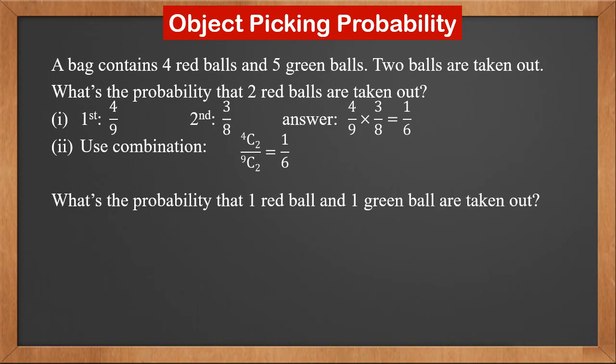What's the probability that one red ball and one green ball are taken out? Using the probability approach, for the first ball, the probability of red is four over nine. After a red ball is taken out, there are eight balls left in the bag and five of them are green. So the probability that the second ball is green is five over eight. Multiplying these two, the answer is five over eighteen.